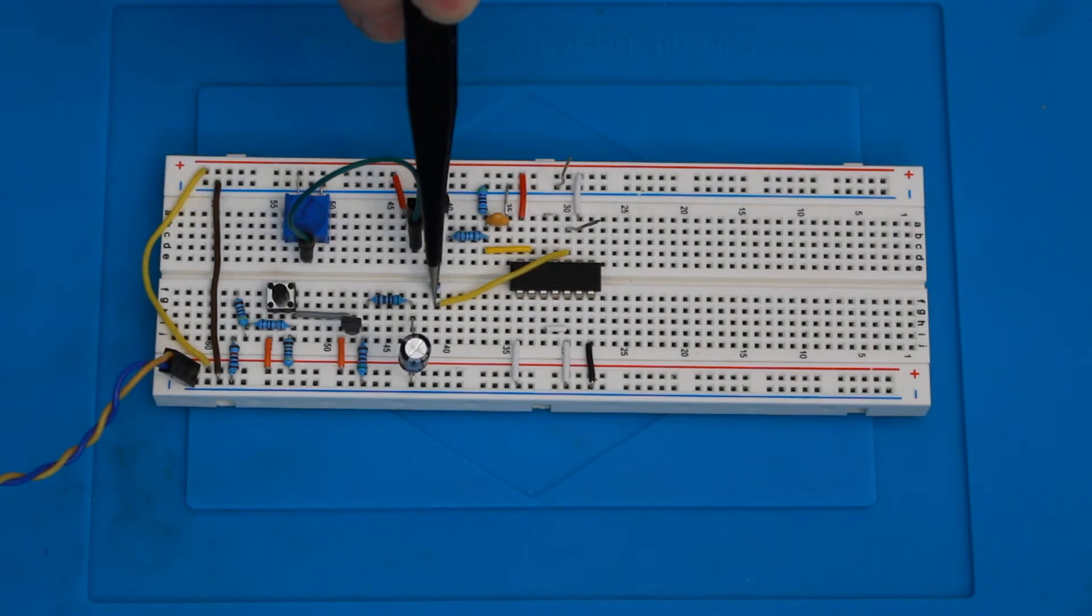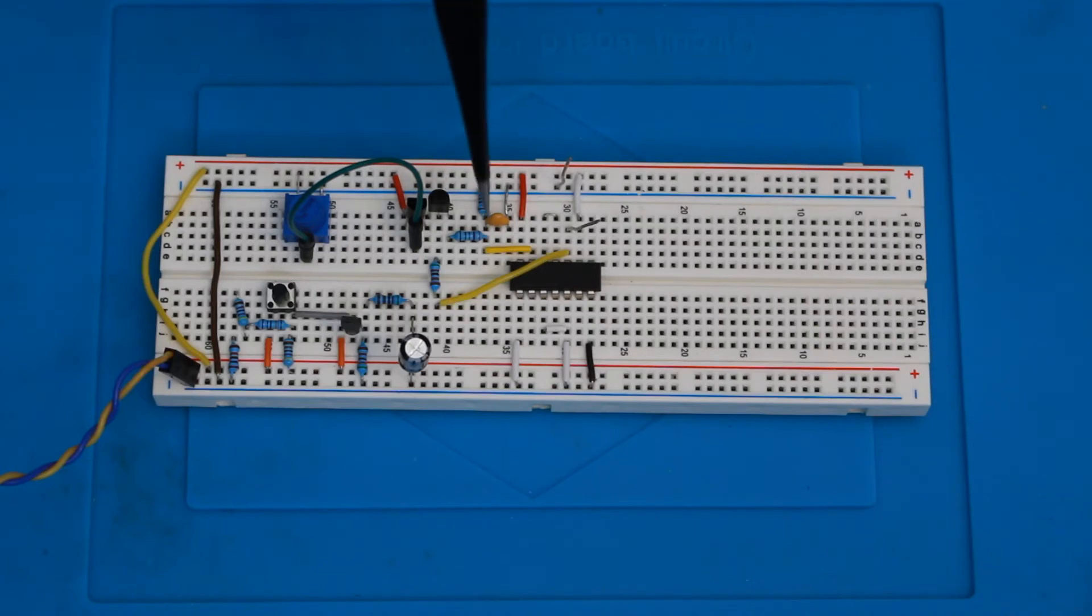The output of that second inverter goes through this 5K resistor, leading to the base of the PNP transistor. When the base is low, current flows between the emitter and the base, allowing current to flow from the emitter to the collector, and into the potential divider, charging the capacitor.